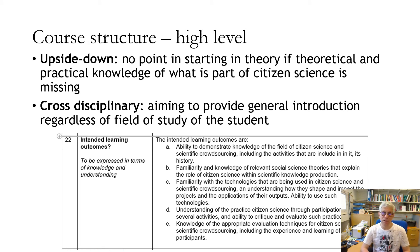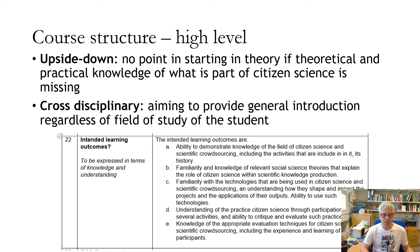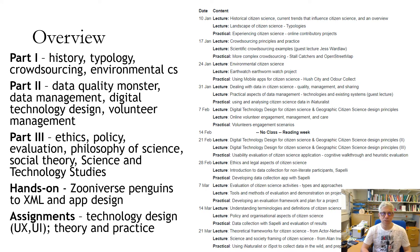The course structure is interestingly done upside down: we don't start from theory and then move to practice, because students don't yet have a concept of what citizen science includes. So we start with a lot of demonstration and hands-on experience, so students can begin building an understanding of what citizen science is, and then build theory on top of that. It was also important to make it cross-disciplinary — providing a general introduction so anyone from any faculty at UCL can join and learn.